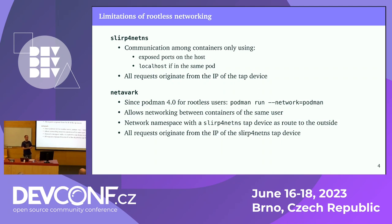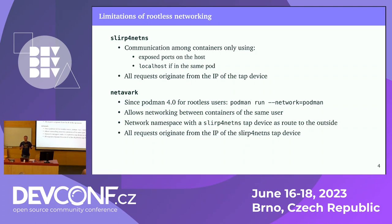There's an improvement on top of that where you essentially take slirp4netns, put it in the user namespace that owns the network namespace, and then do standard networking using Netavark. That's great because it allows standard networking between containers, but it still uses the slirp4netns tap device, so all requests still originate from the same IP address. This isn't ideal if what we want to do is run a service.